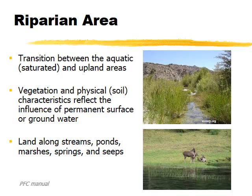A riparian area is that transition area between the aquatics and the uplands. It's unique because it has a unique set of soil characteristics and vegetation that result from being inundated by water for at least part of the season. It includes land along streams, ponds, marshes, seeps, and springs. Those definitions are from the PFC, or Proper Functioning Condition manual, which is available on BLM and Forest Service websites.